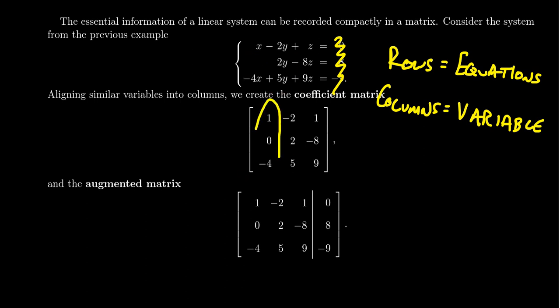Now each column of the matrix coincides with a variable. So the first column gives you the coefficients of x: 1, 0, -4. The second column gives you the coefficients of y: -2, 2, and 5. And then the third column is going to give you the coefficients of z: 1, -8, 9. This is then the coefficient matrix of the linear system, and it encodes all of the variables. It turns out if we organize the coefficients by rows and columns like we did, we don't actually have to write down the variables anymore, because I know the first column is the first variable, x, and the first row is the first equation.